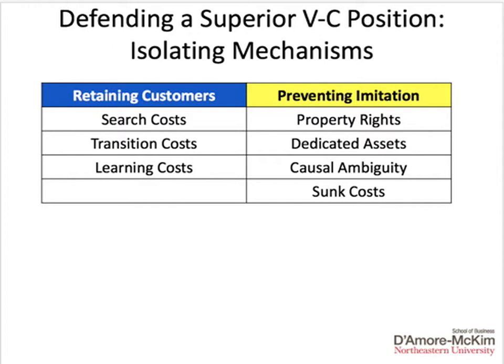On the right-hand side, we focus on how we might prevent rivals from imitating our products or services and imitating our advantage. We'll use things such as property rights that will protect them, or highlighting and creating dedicated assets that cannot be copied. Causal ambiguity refers to an inability to understand cause and effect — rivals may understand the inputs and the outcome in terms of an advantage, but they can't copy it because there's a process or series of steps in the middle that are hard to define. And finally, we will try to prevent imitation because we will have invested sunk costs that other firms will not be able to copy.